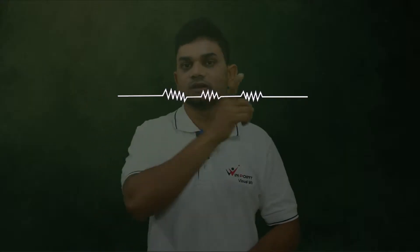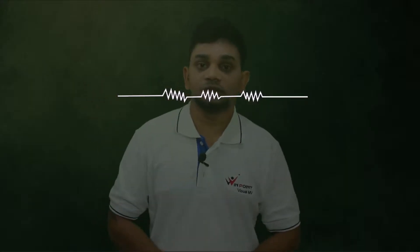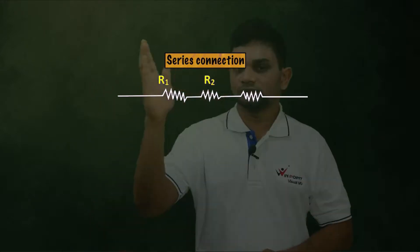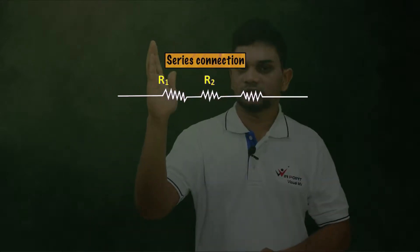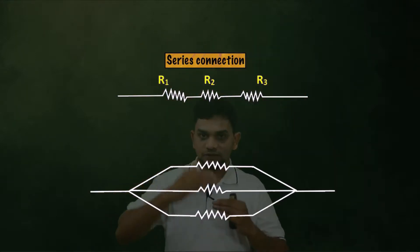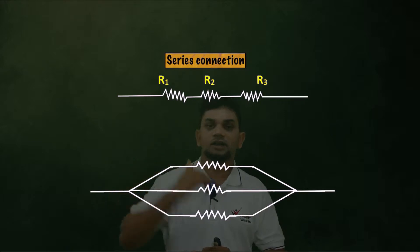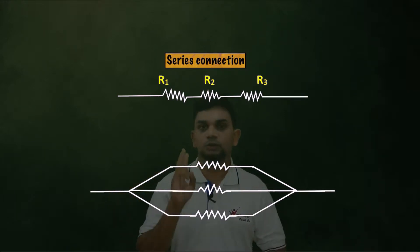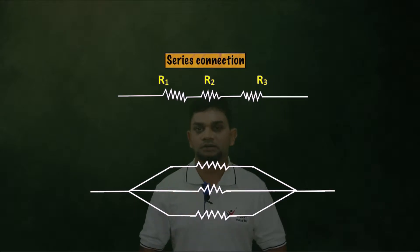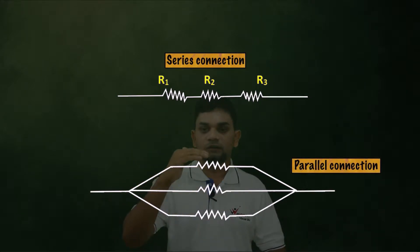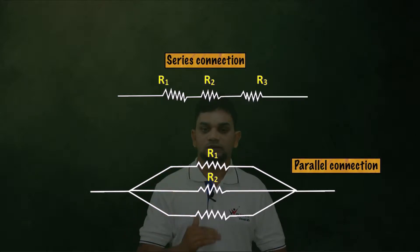This arrangement is known as series connection — you can see it is in a straight line. The resistors are R1, R2, and R3. The second type is parallel connection, where these resistors are parallel to each other. So there are two types of connection: series connection and parallel connection. In the parallel diagram, the resistors are R1, R2, and R3.